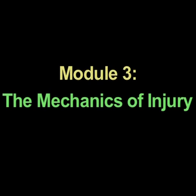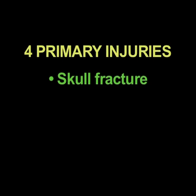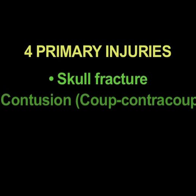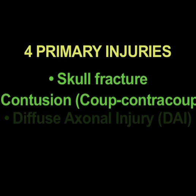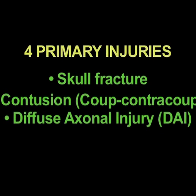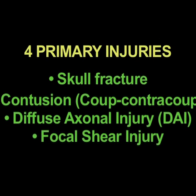What I'd like to talk to you about now is how the brain is injured. There are four primary ways that the brain can be injured: a skull fracture, a contusion from a coup or contra-coup injury, a diffuse axonal injury, or a focal shear injury.